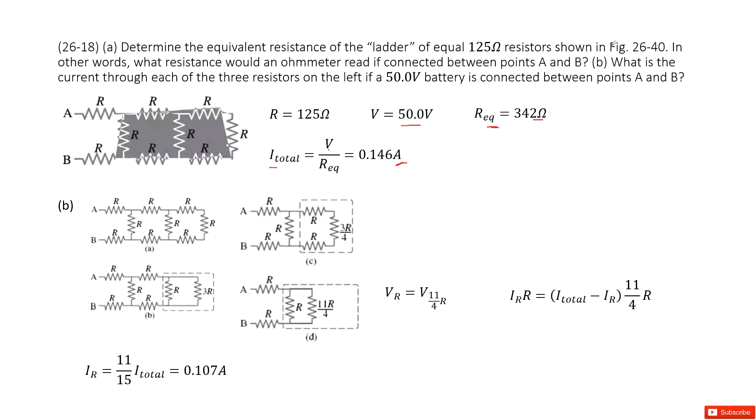Now, next question asks you, what is the current that goes through each of the three resistors on the left? So that means you need to know the current through this one, this one, and this one.